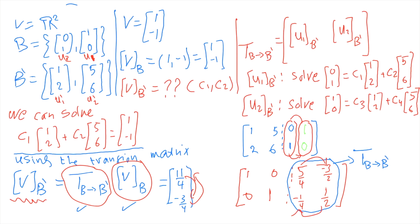That is the change of basis. This example used two vectors in each basis, but the same idea applies with three, four, or n vectors in Rn. One last important point: the transition matrix is always invertible.